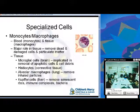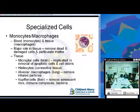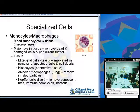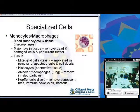The monocyte is found in blood; in tissue it's called a macrophage. It plays a major role in removing dead and damaged cells and particulate matter. In the brain it's called a microglial cell, implicated in removal of apoptotic cells. In connective tissue, histiocytes. In the lung, alveolar macrophages that remove inhaled particles. In the liver, Kupfer cells that remove senescent red blood cells, immune complexes, and bacteria.